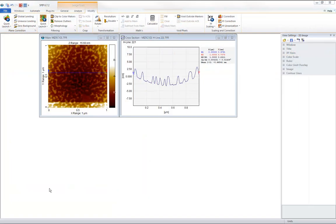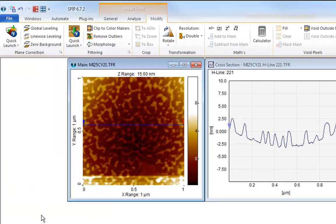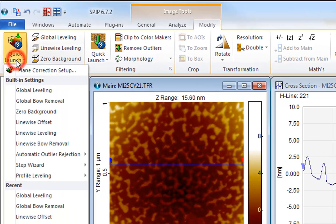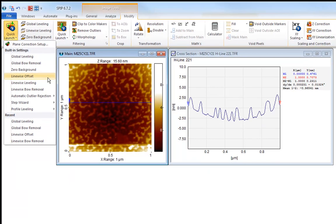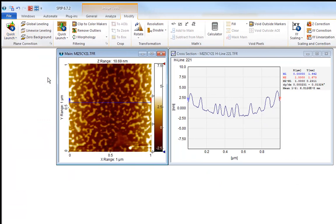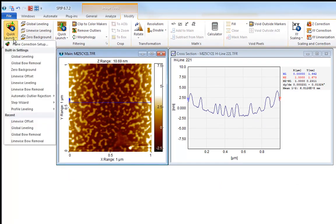In some cases, it is necessary to go to second or higher order linewise correction, but I'll usually recommend staying with the first order, because higher orders can lead to distortions. In fact, whenever it is possible, I will recommend only to do linewise offsetting - that is, setting the mean height of each scanline to zero. This is not always good enough to compensate for drift, but almost always good enough to compensate for tip jumps.